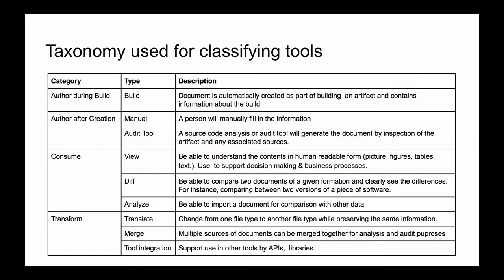Those are the first three categories. The fourth is 'transform,' which is needed when you need to translate between one format and another — like that universal tool. You may want to merge multiple SBOM documents together to pull together a full product made of multiple subcomponents. The other classification is libraries and APIs, where you use those in your own tools to read and write documents efficiently and effectively.